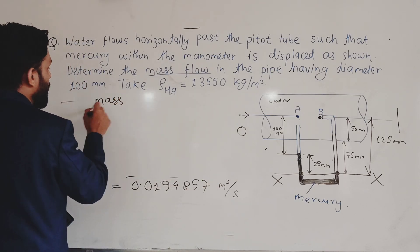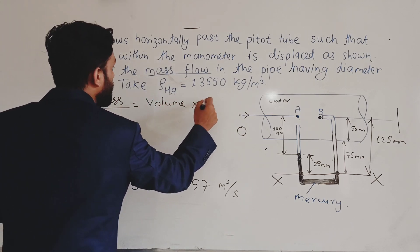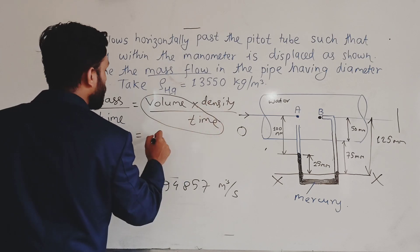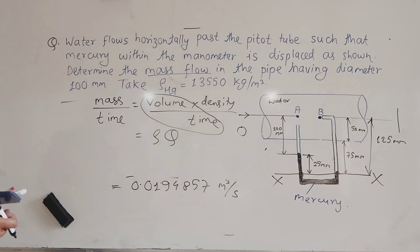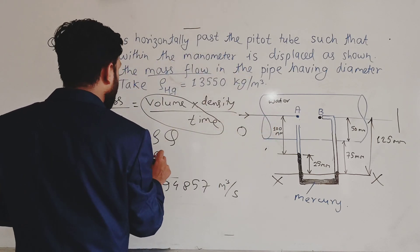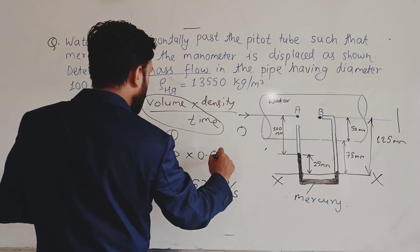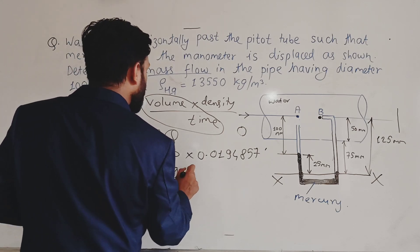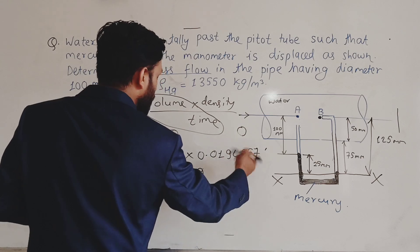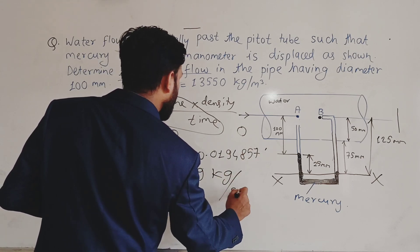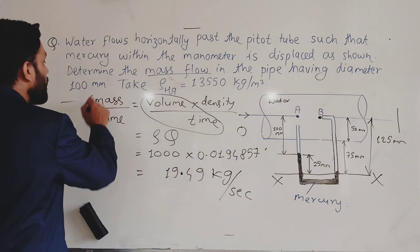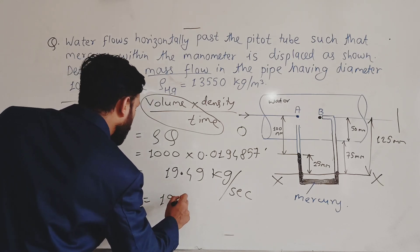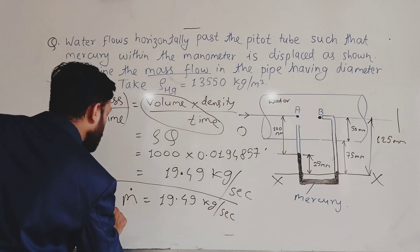Mass flow rate ṁ = ρ × Q, where volume/time is discharge Q and density ρ for water is 1000 kg/m³. So ṁ = 1000 × 0.01949 = 19.49 kg/s. Therefore, ṁ = 19.49 kg/s.